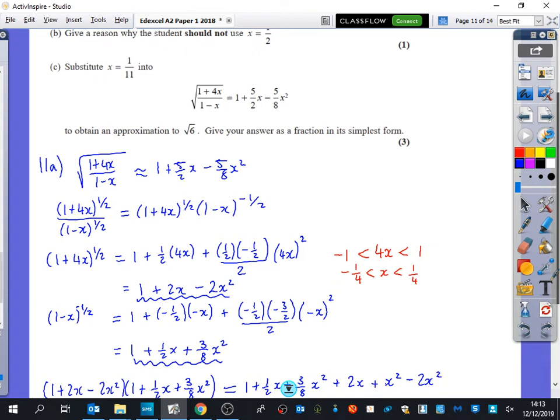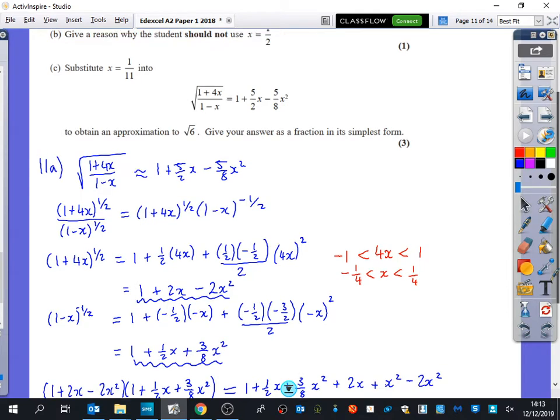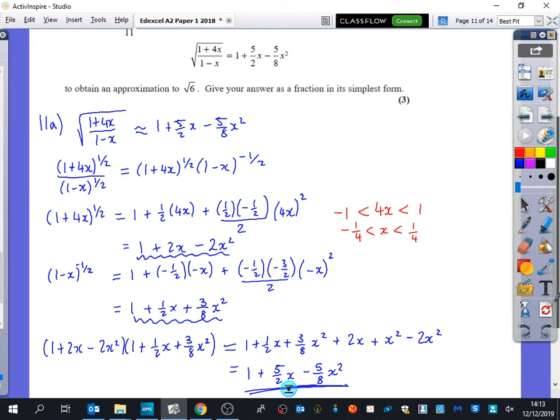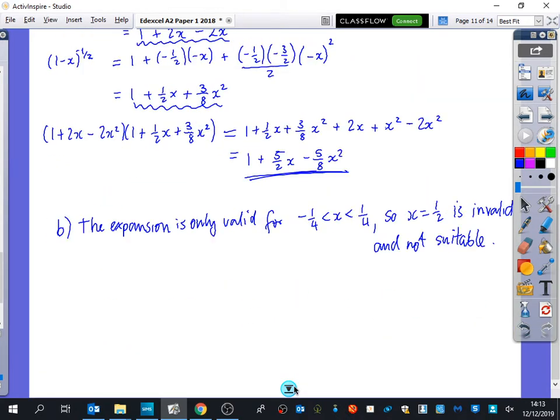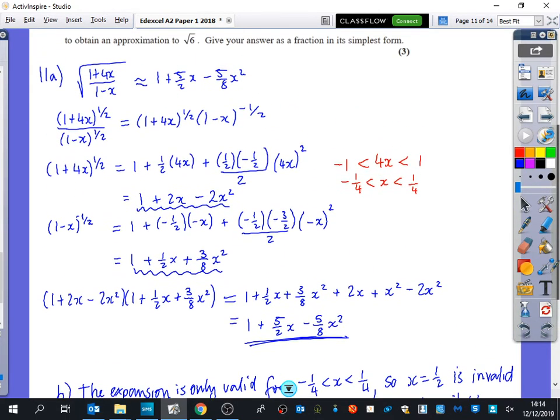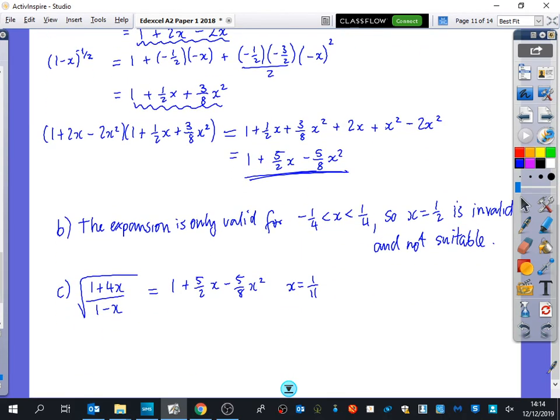Part c says substitute x equals 1 over 11 into this to attain an approximation to root 6. Give your answer as a fraction in its simplest form. So we better do some substitution all over the place here. Everywhere that it says x we're going to put it in as 1 over 11. So we've got, I'm going to run out of space on this board, part c we've got the square root of 1 plus 4x over 1 minus x is equal to 1 plus 5 over 2x minus 5 over 8x squared. And we're going to use the substitution that x is equal to 1 over 11. Hopefully that's going to show us something to do with root 6. I'm just checking I've got that written down right.